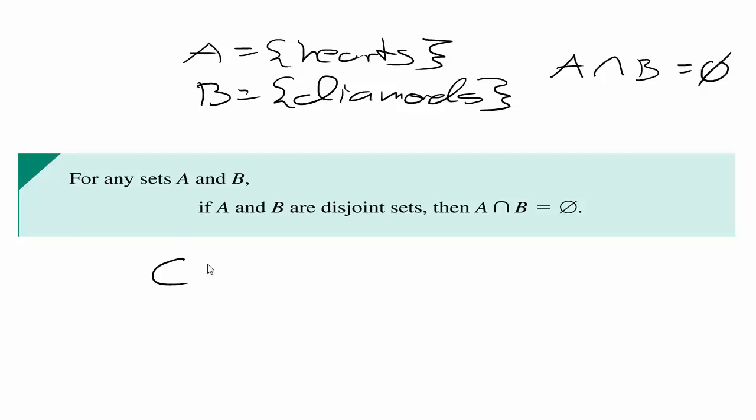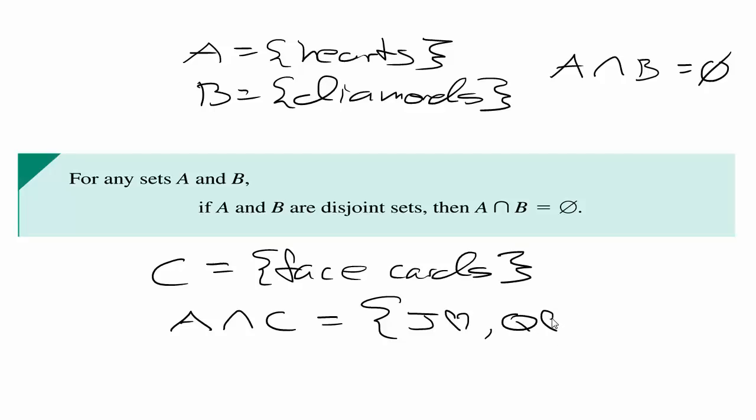But what about if we looked at C which were all face cards? If you are not a degenerate gambler and you don't know what face cards are they are just jacks, queens, and kings and there are three of them in each of the four suits. There is a jack, queen, and king of hearts, diamonds, spades, and clubs. So if we did A intersect C we are now going to take all of the hearts and intersect them with the face cards and you end up just getting jack of hearts, queen of hearts, and king of hearts. Those three cards. That is what the intersection of those two sets would be. Intersections aren't always empty. They are only empty when the two sets are disjoint which is a fancy word for meaning they have nothing in common.